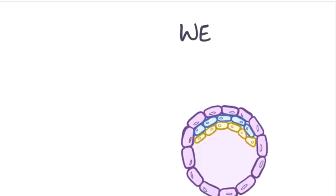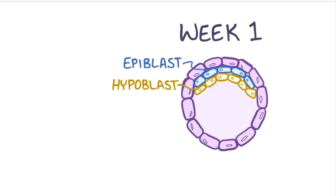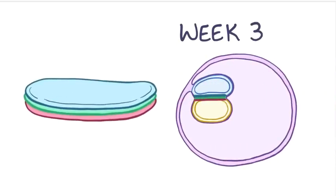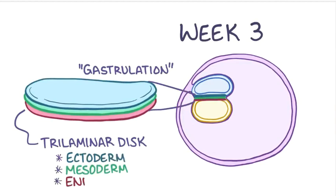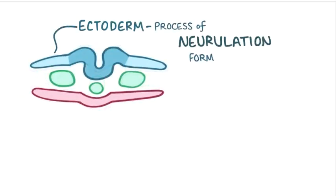When the embryo is one week old, it has two layers of cells: a dorsal or outer epiblast layer and a ventral or inner hypoblast layer. During week 3 of development, the embryo undergoes gastrulation, where the cells in the epiblast layer form a three-layered trilaminar disc with an ectoderm, mesoderm, and endoderm layer. The ectoderm is the dorsal-most germ layer.